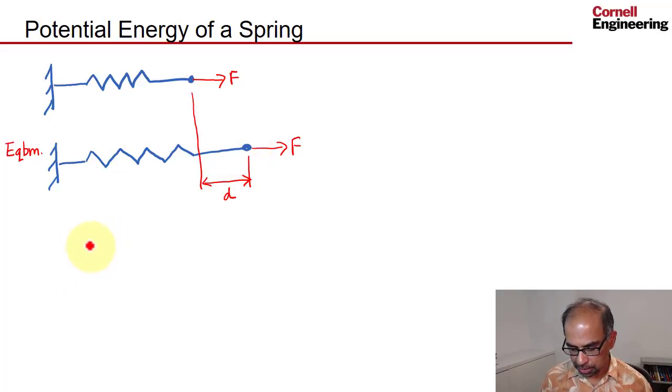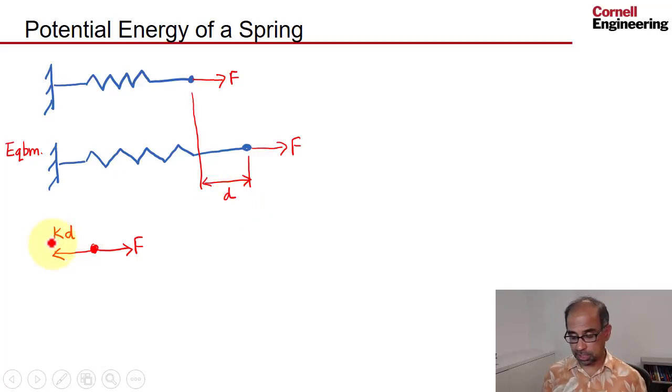In the equilibrium approach, you would look at this blob here and you would say there's a force F acting on it in the horizontal direction, and the spring is pulling back on that blob by an amount equal to K*D, D being the extension and K being the spring constant—it's a property of the spring.